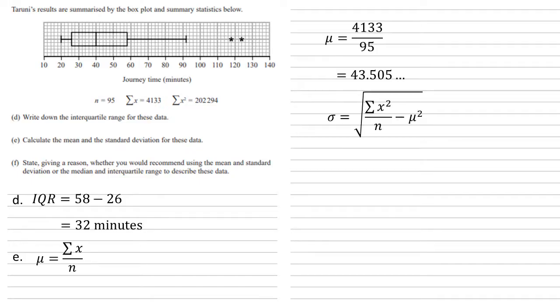The formula for standard deviation is the square root of the sum of x squared all over n minus mu squared. Using our sum of x squared, which is 202,294, and n of 95, and the mu which we've just worked out of 43.5, putting them into the formula we get 15.385. Again, this can be rounded to one or two decimal places.